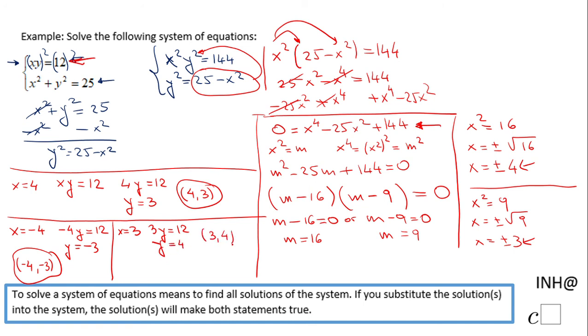We have one more, the last one. x equals negative 3, which is going to give us negative 3y equals 12, which means y equals negative 4.